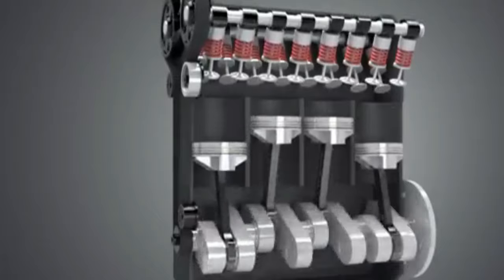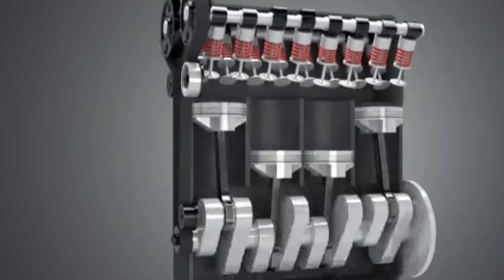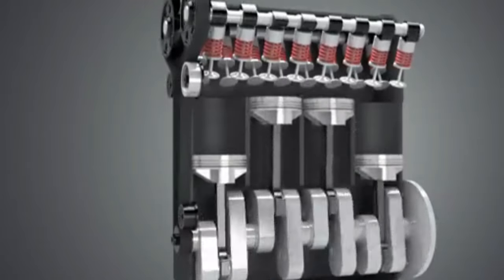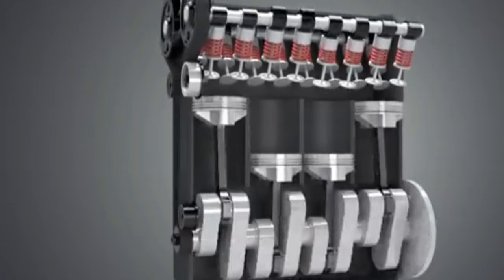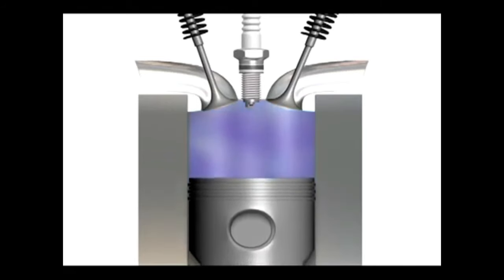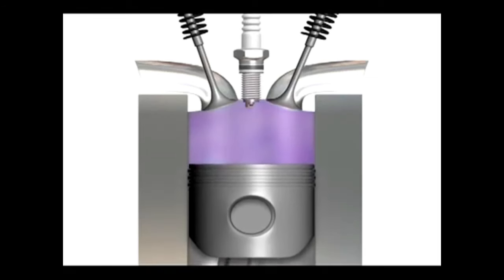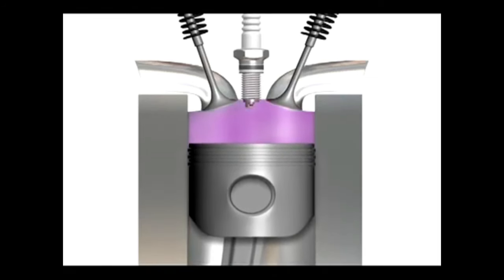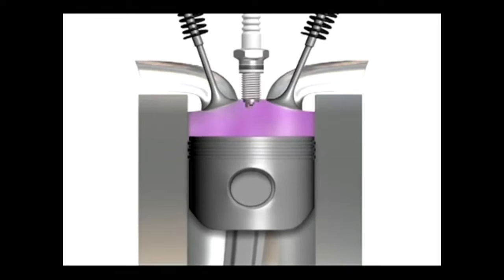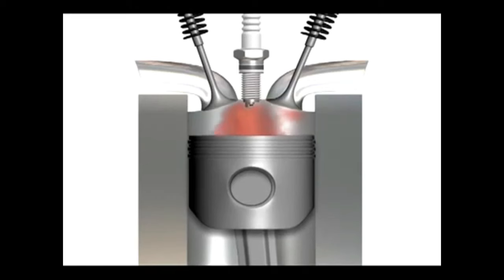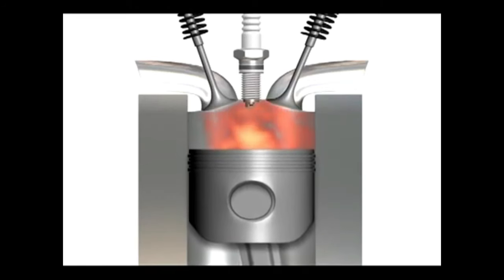In all types, fuel and air oxygen are led into a so-called combustion chamber. In a petrol engine, a spark from a spark plug ensures that a small amount of petrol explodes. When the petrol burns and explodes, the gas that is created wants more space and the piston is pushed down into the cylinder.